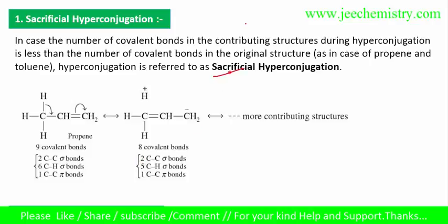In sacrificial hyperconjugation, by the name we can know that there is some sacrifice — sacrifice means there is a bond sacrifice. The number of covalent bonds in a contributing structure during hyperconjugation is less than the number of covalent bonds in the original structure.